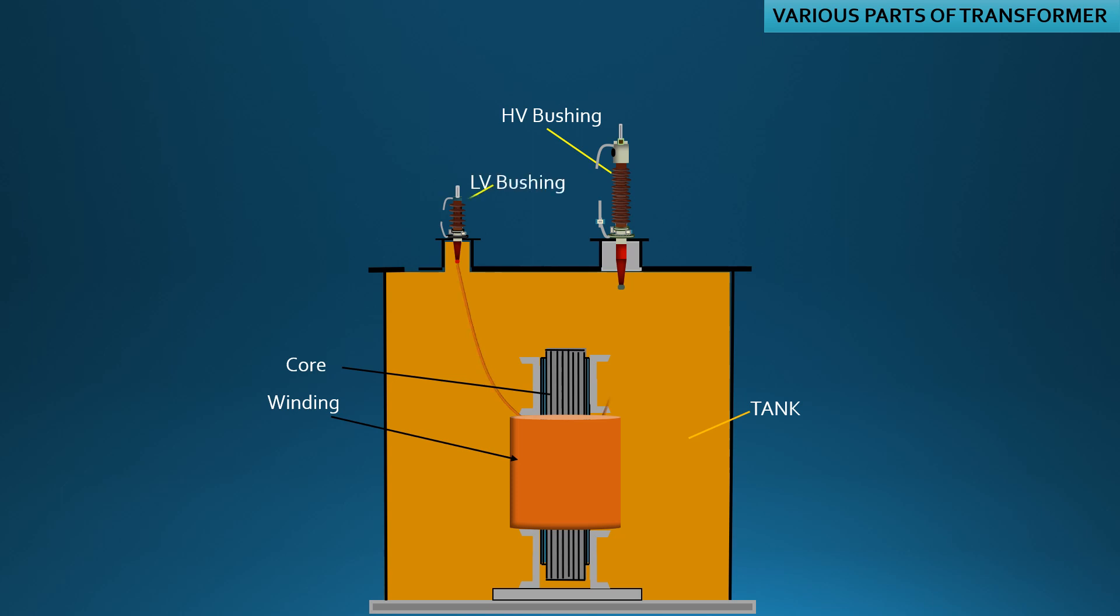Bushings are erected on a cylindrical post called the turret. Within the turret, bushing CTs and thermal CTs are placed. A neutral bushing is also placed where it is applicable.